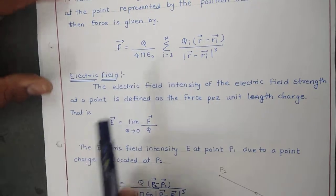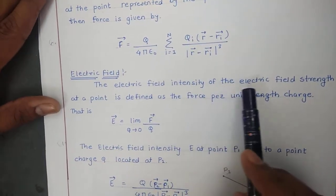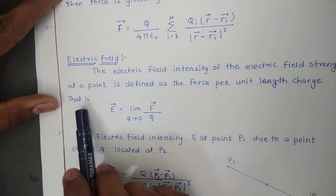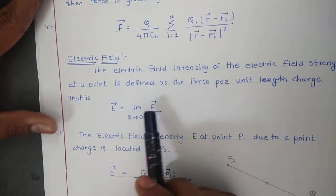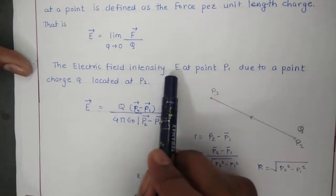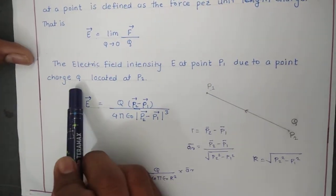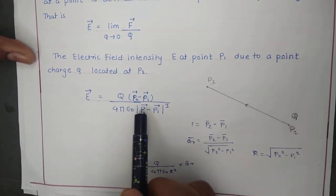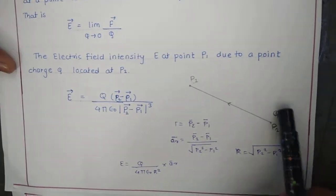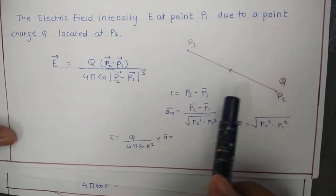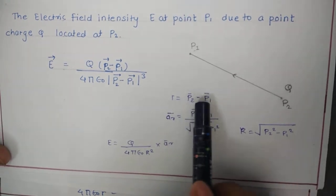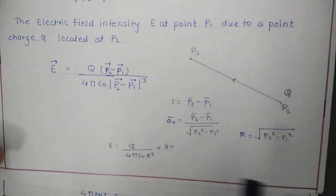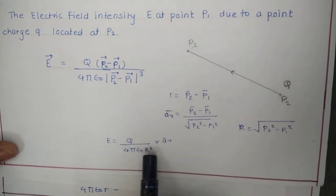The electrical field intensity for the point charge: the electrical field intensity or electric field strength at a point is defined as the force per unit charge. That is, E equals the limit as Q tends to 0 of F-bar upon Q. The electrical field intensity E at point P1 due to the point charge Q located at P2 is given by E equal to Q times (P2 minus P1) upon 4pi epsilon-0 times (P2 minus P1) cubed. Here P2 is the source point and P1 is the destination point. For the unit vector: (P2 minus P1) upon the square root of (P2 minus P1) squared. The intensity is given by Q upon 4pi epsilon-0 R-squared into AR.